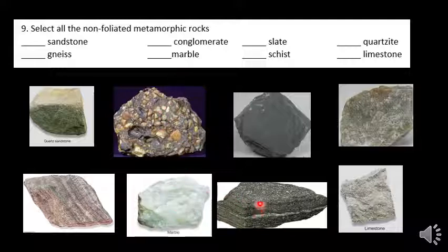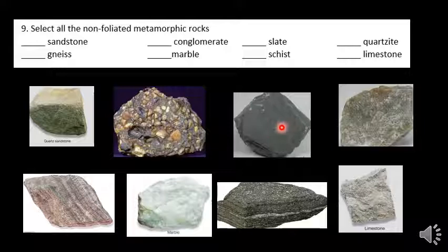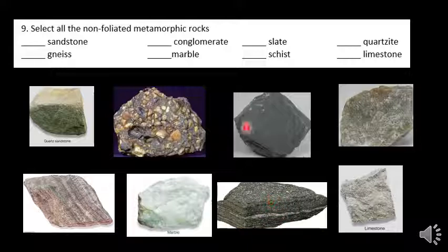Finally, schist. Schist is what you get if you take slate and add even more pressure to it. Slate would be a low-grade metamorphic rock; schist would be a high-grade metamorphic rock. But you can still see the lines and bands in schist, so it is foliated. We're not going to select the foliated ones.